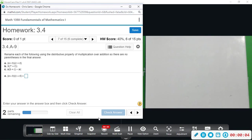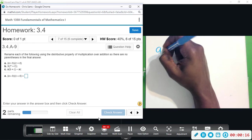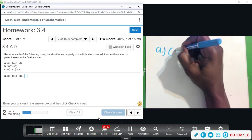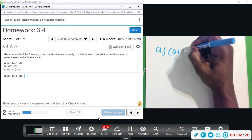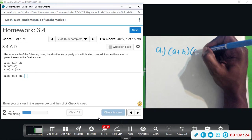Okay, problem seven. We want to rename each of the following using the distributive property of multiplication over addition so there are no parentheses in the final answer. Part a, we have (a+b)(c+d).